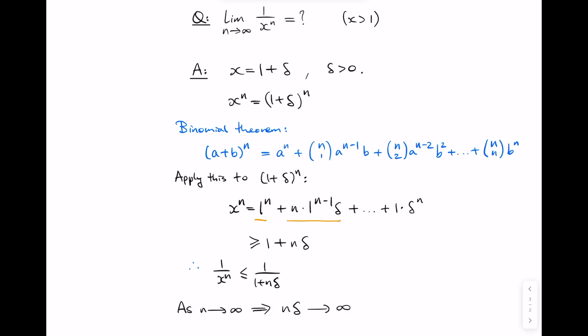Now as n goes to infinity, n delta goes to infinity. Therefore, 1 over 1 plus n delta goes to 0.